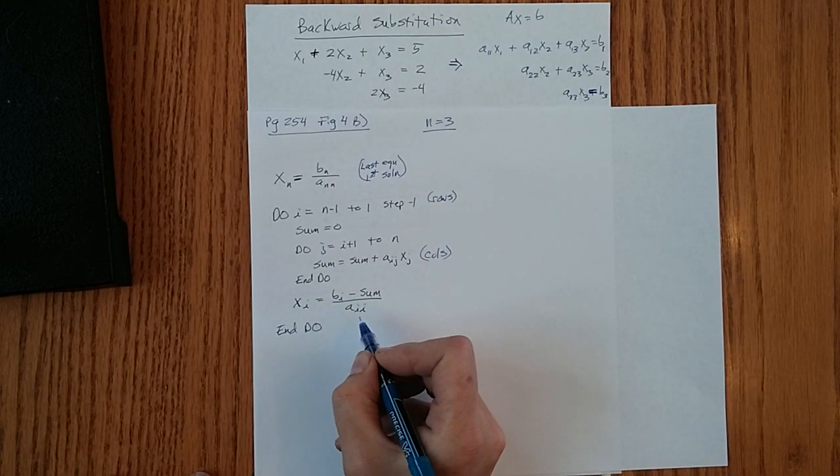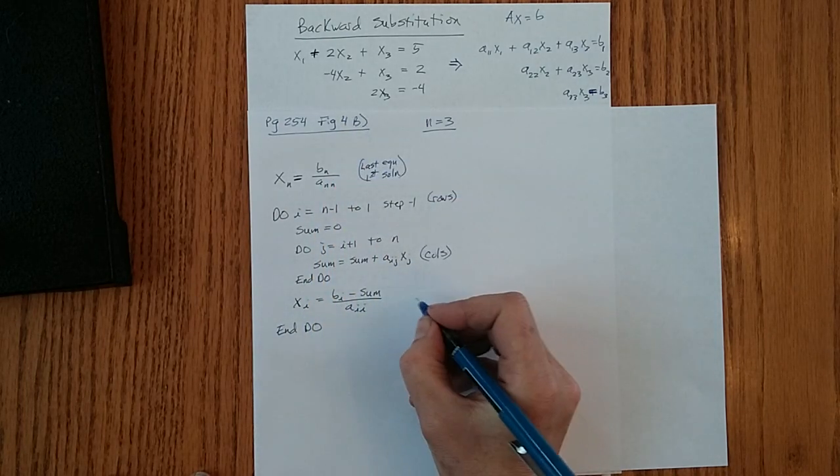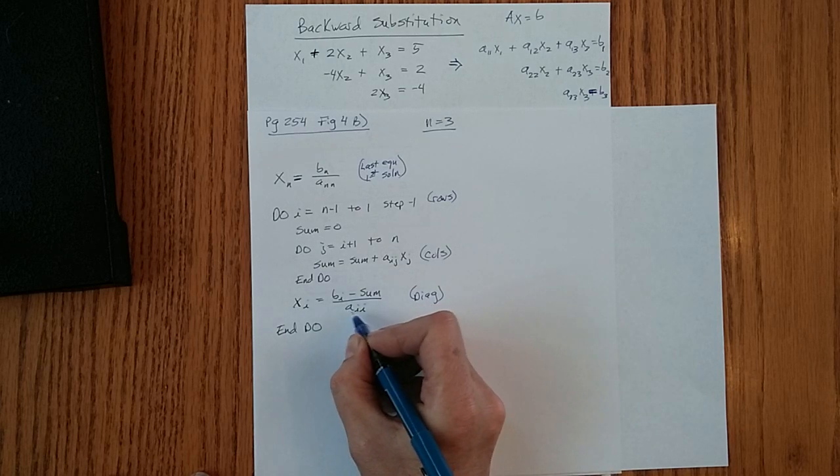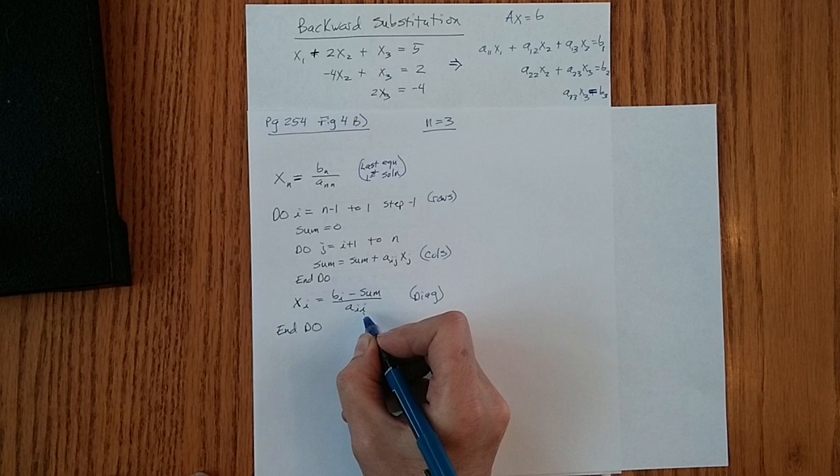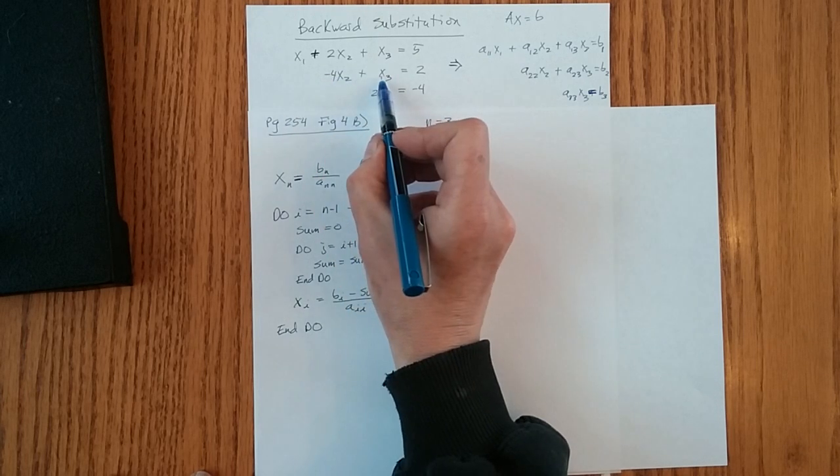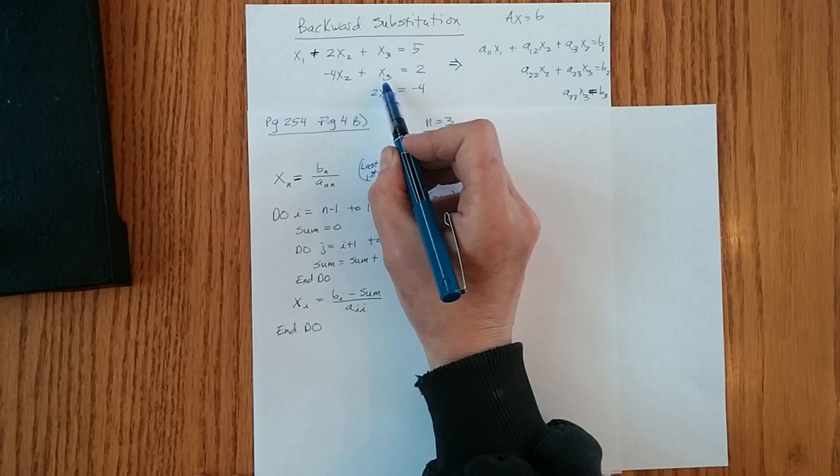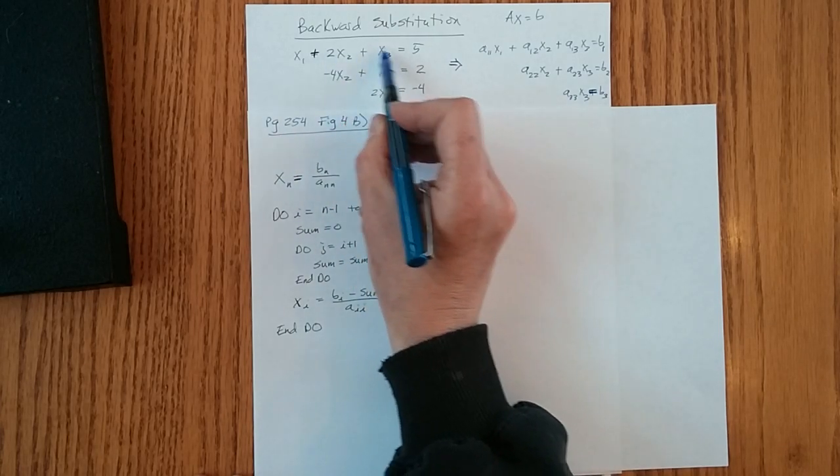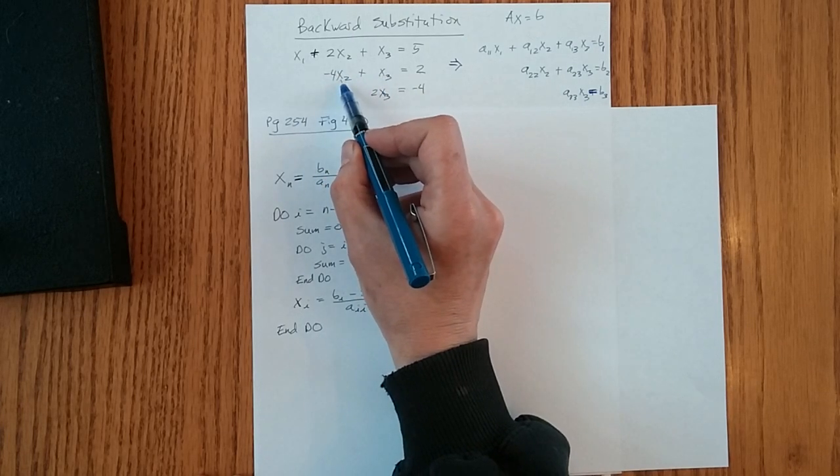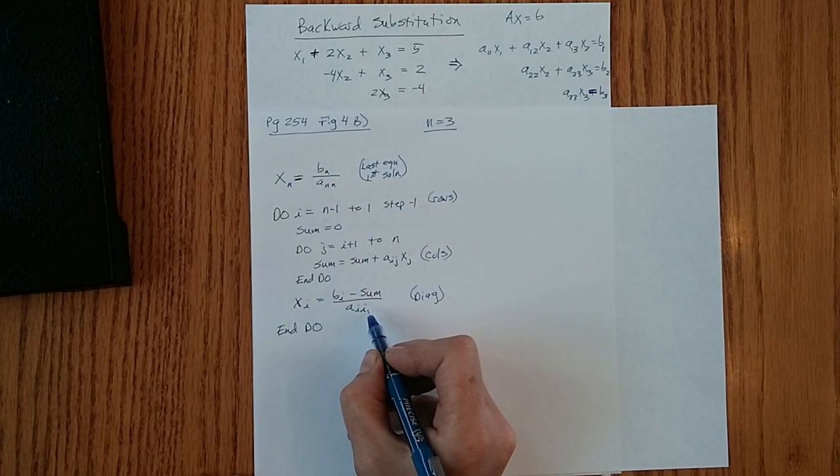And this last line of the pseudocode is going to be the solution. And it's on the diagonal term. We know that because aii, that's always going to be a33, a22, a11. It's going to be right here on the diagonal. And that's where we're going to use the constant, subtract the sum what we calculated prior to the diagonal, and divide by the diagonal's coefficient. So that's what's happening in that line.